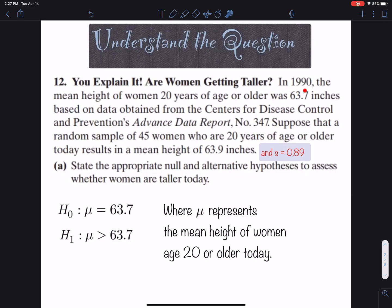First, let's understand the question. In 1990, the mean height of women 20 years or older was 63.7 inches. A random sample of 45 women today results in a mean height of 63.9 inches with a sample standard deviation of 0.89. We want to test if women are taller today. Notice it says 'taller' - this tells us the alternative hypothesis is a right-tail test. The sample mean today is 63.9 versus 63.7 in 1990, so we have reason to believe women are taller.